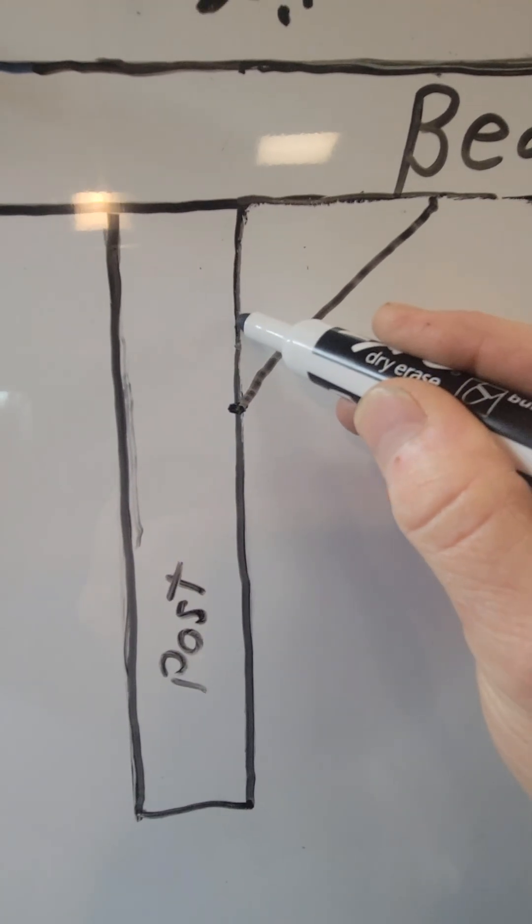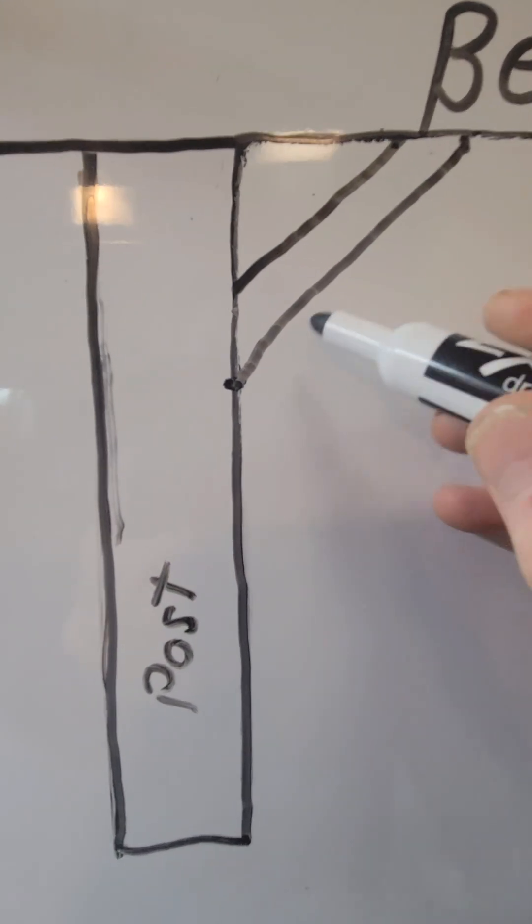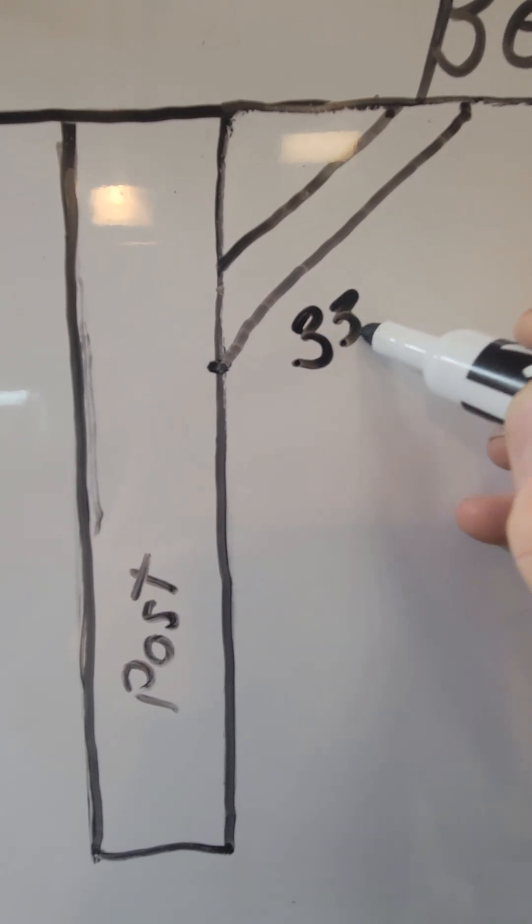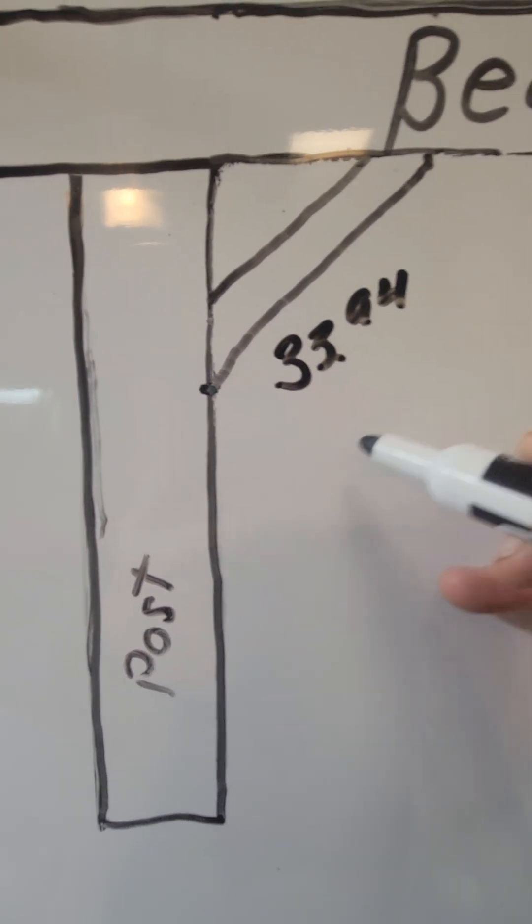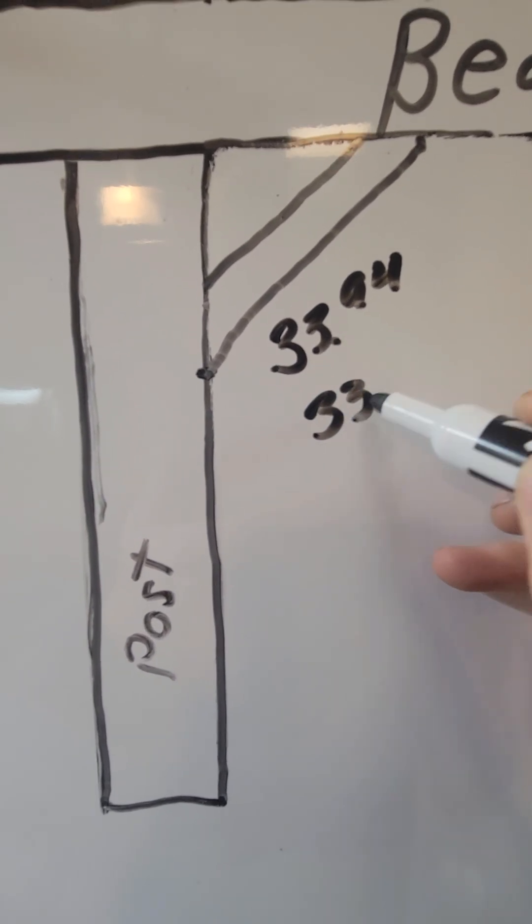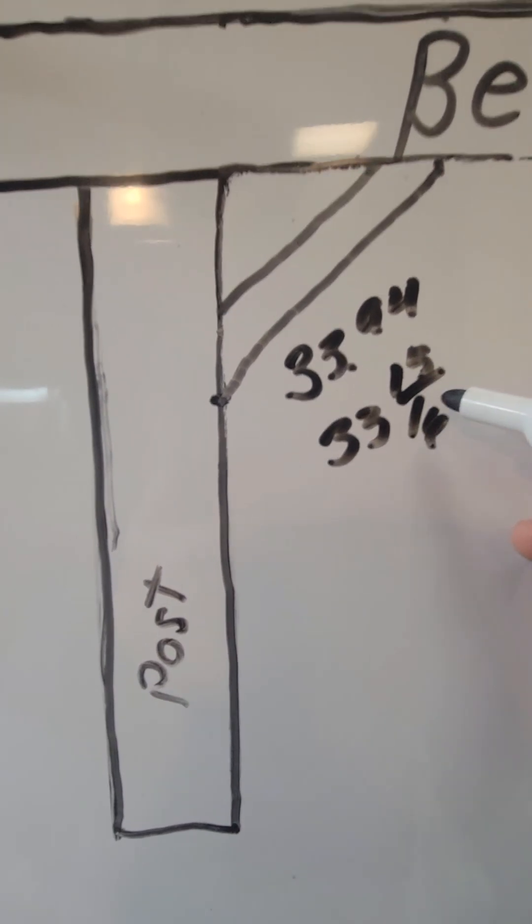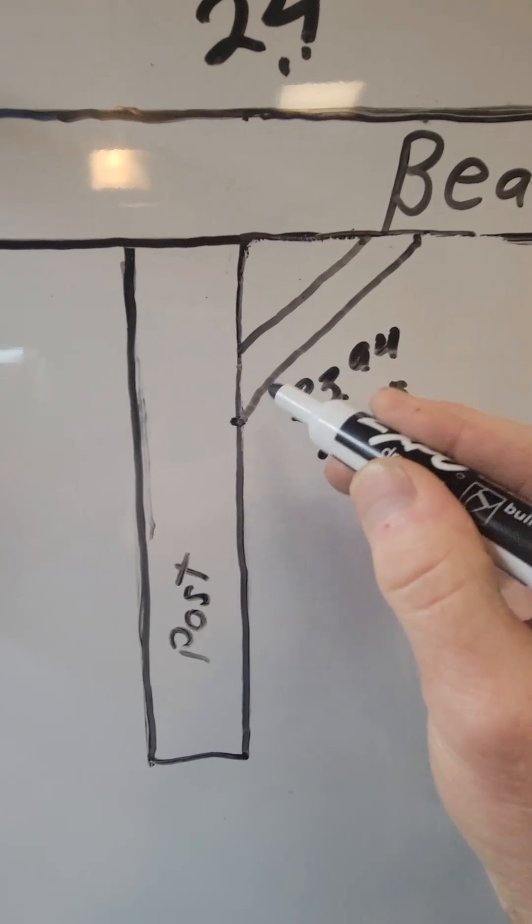And on your diagonal right here you would have 33 and 94 one-hundredths of an inch right here, which would equal 33 and 15 sixteenths of an inch on this diagonal right here.